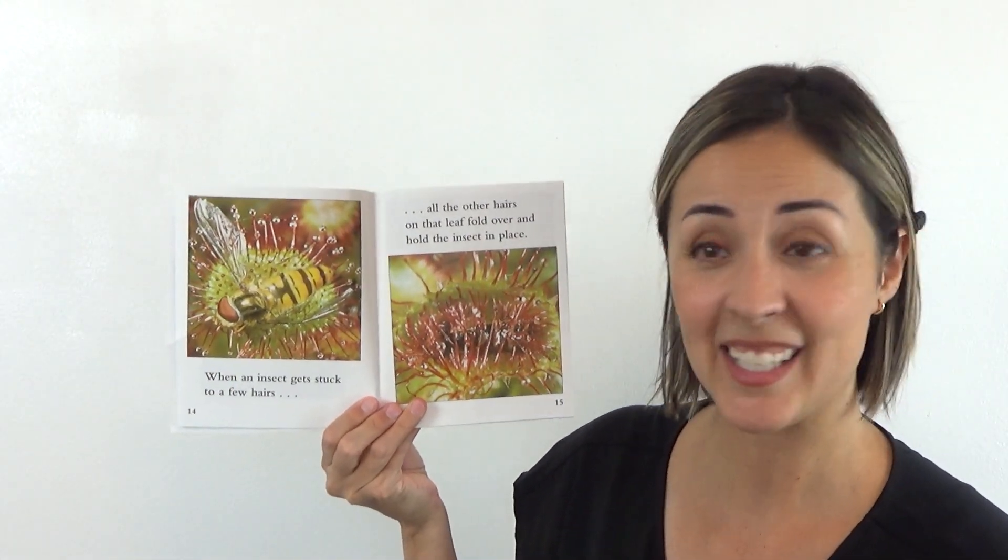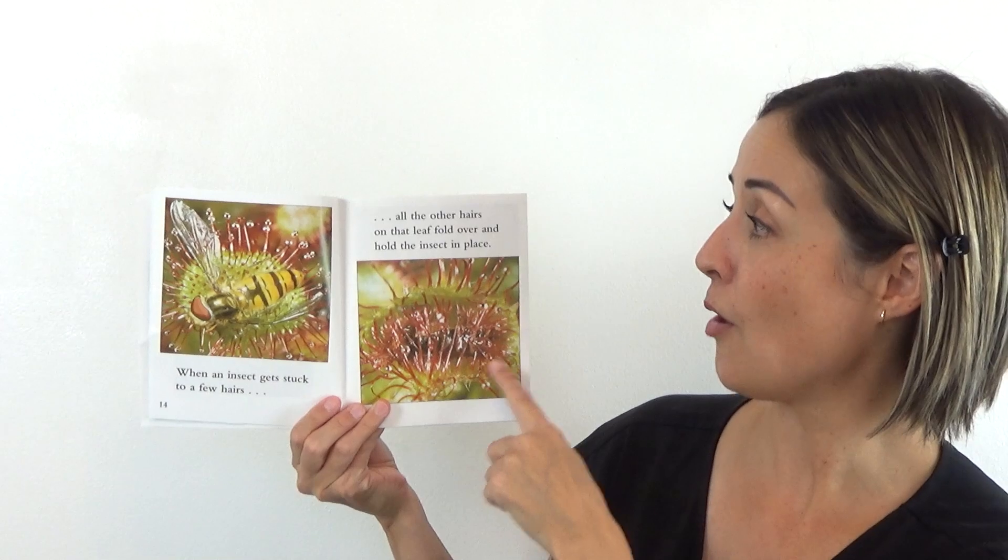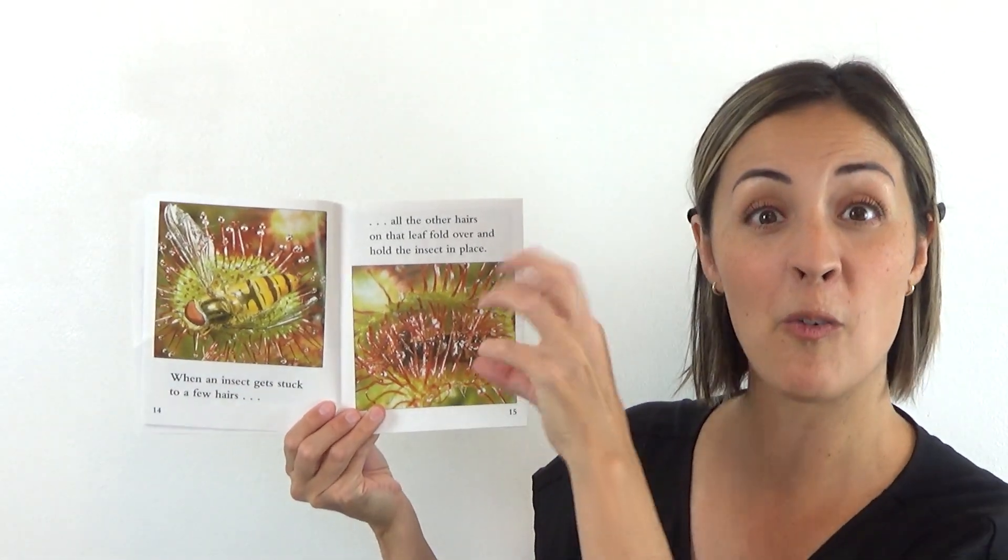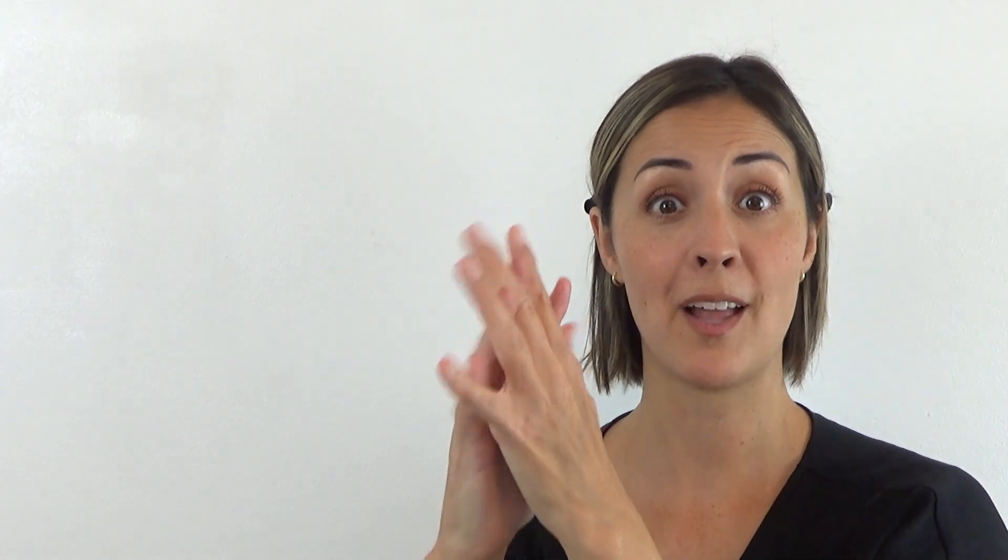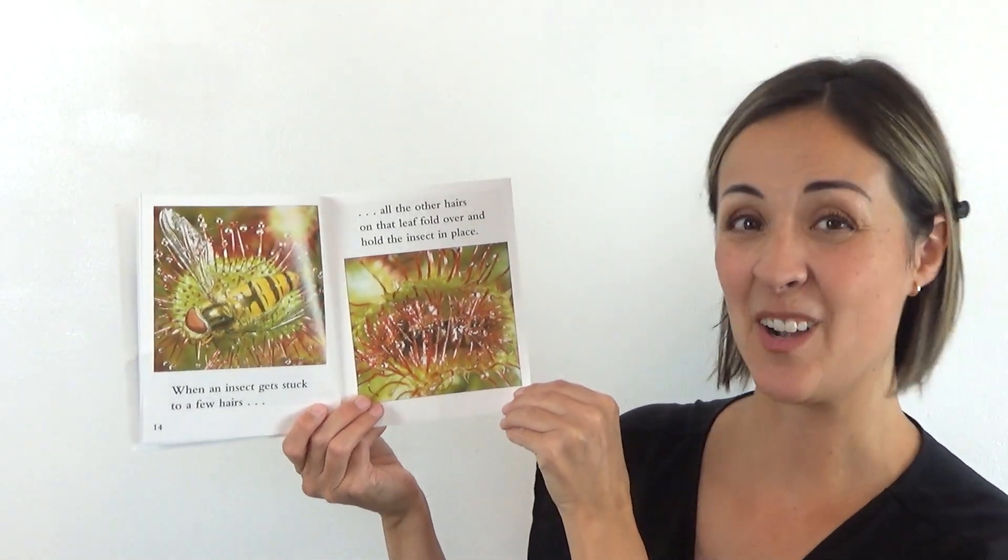When an insect gets stuck to a few hairs, all the other hairs on that leaf fold over and hold the insect in place. So we could actually do that with our hands too. We could pretend that we're a sundew plant and these are all the little sticky hairs sticking up off of the plant and pretend that a little fly lands on this top hair. And as soon as it lands on that top hair, all the other hairs are going to fold around it. So they're waving in the wind and there's the fly. Fold around it. Now we've trapped our insect. Good.